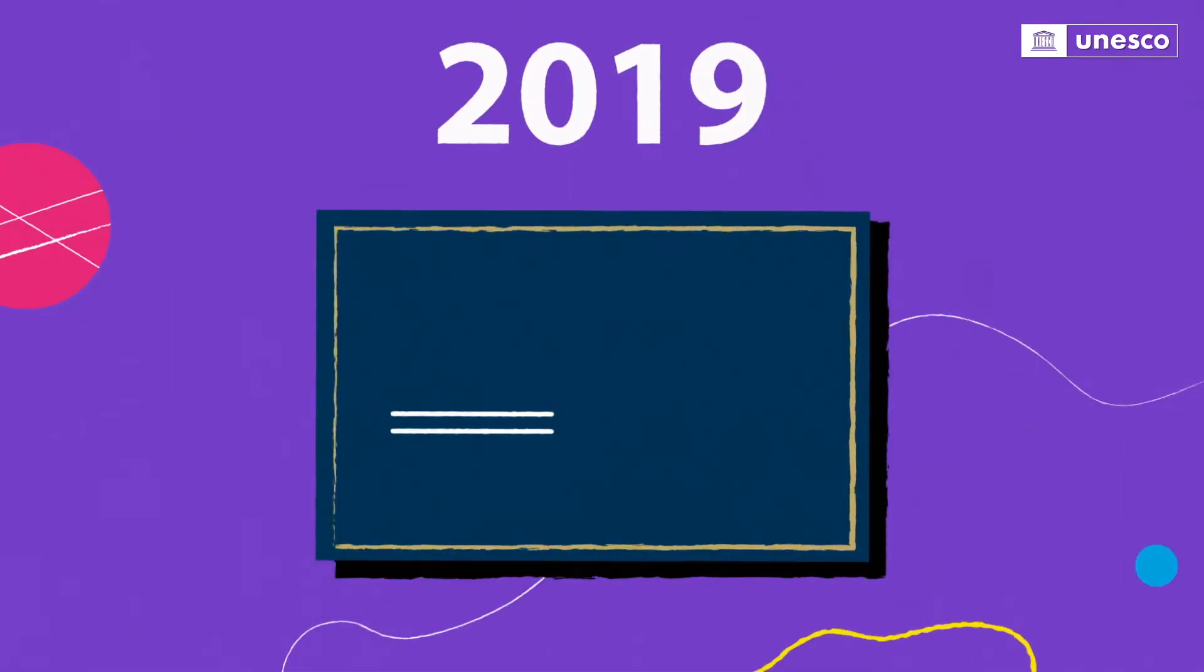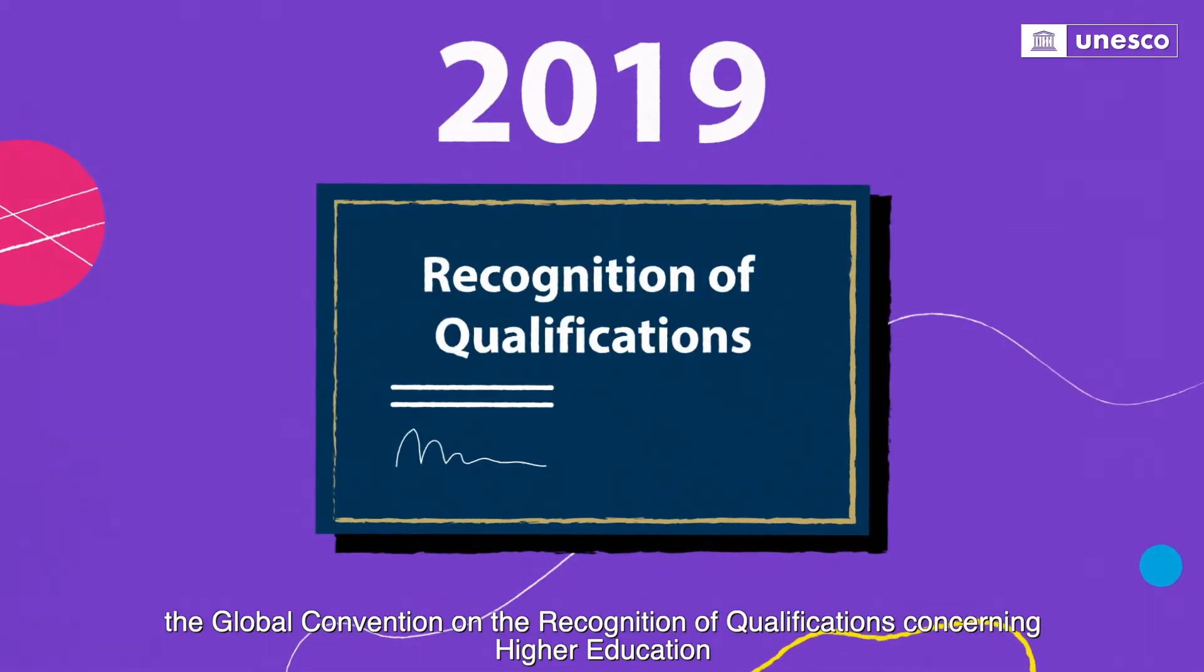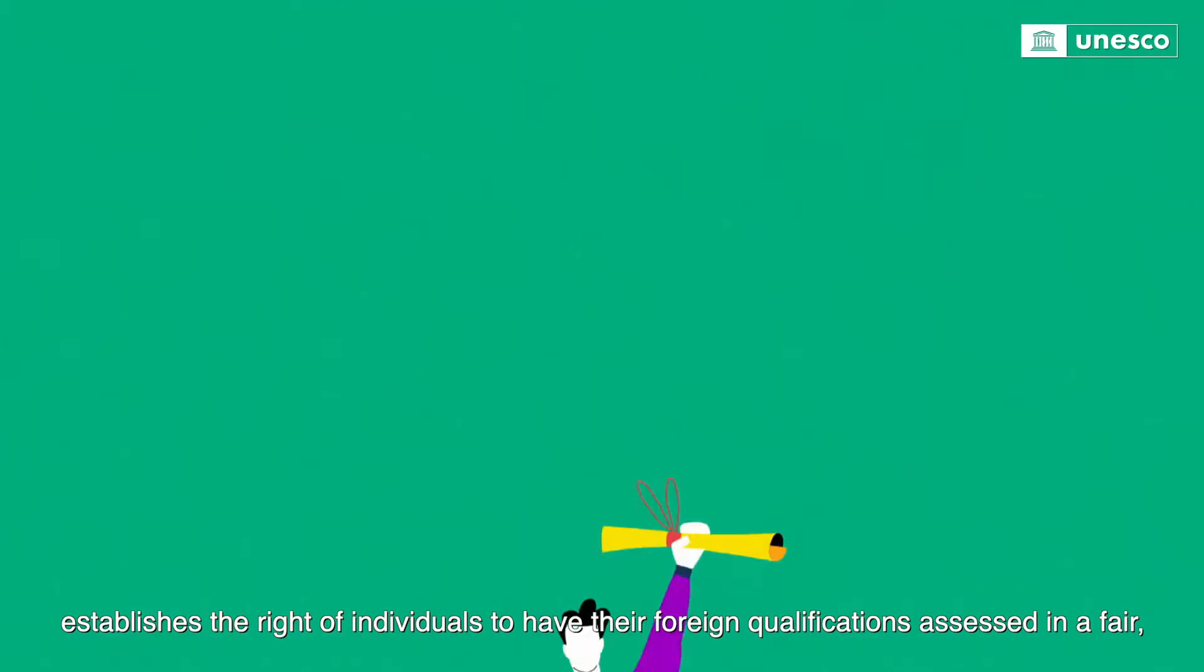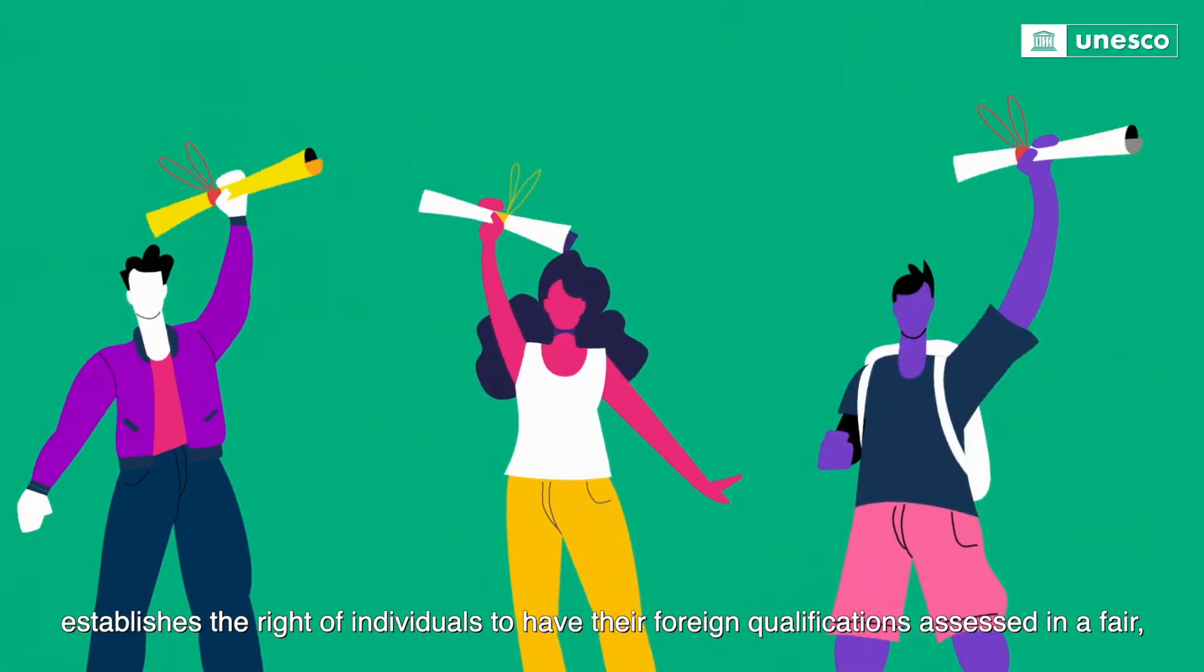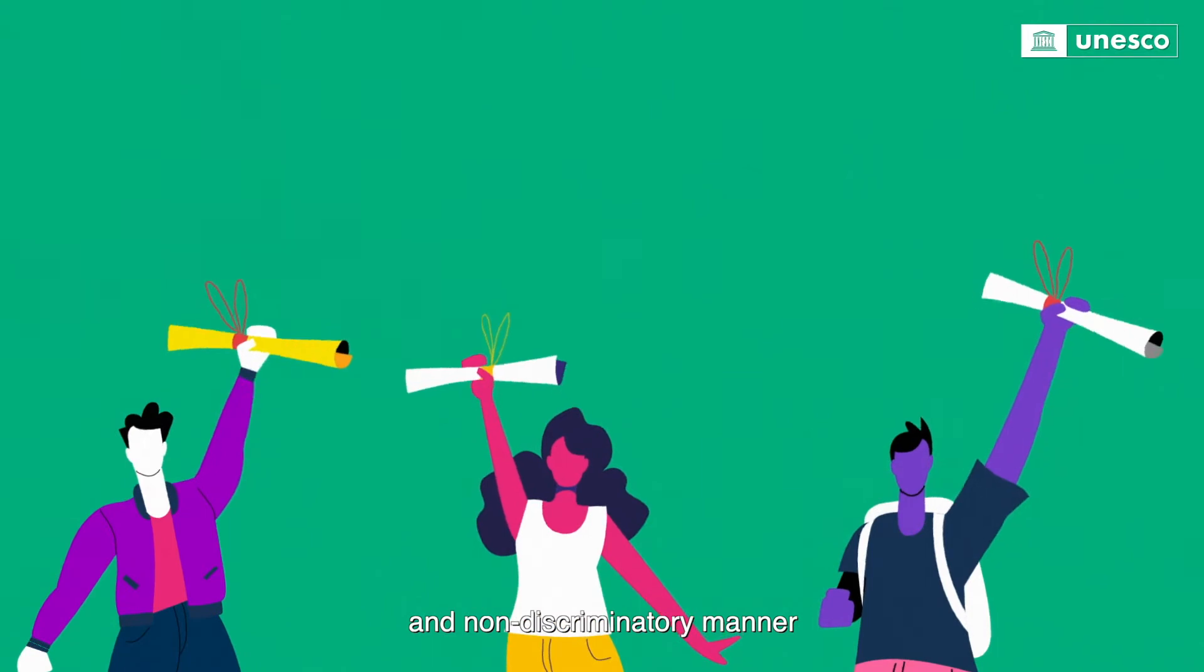Adopted in 2019, the Global Convention on the Recognition of Qualifications Concerning Higher Education establishes the right of individuals to have their foreign qualifications assessed in a fair, transparent, and non-discriminatory manner.